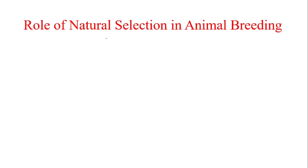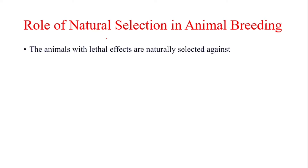In different herds of animals, animals with lethal effects mostly die at a very early age and are unable to reproduce. In this way, natural selection plays a very big role in keeping lethal effects away from both wild populations and domestic populations.